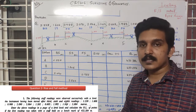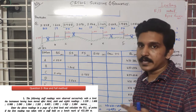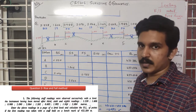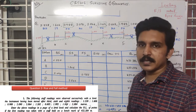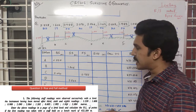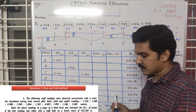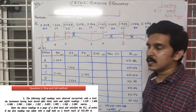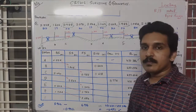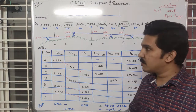You can specify what method you use — you can use rise and fall or the height of instrument method. The height of instrument method has a little bit fewer calculations compared to the rise and fall method. Now, rise and fall method — what is the problem approach?